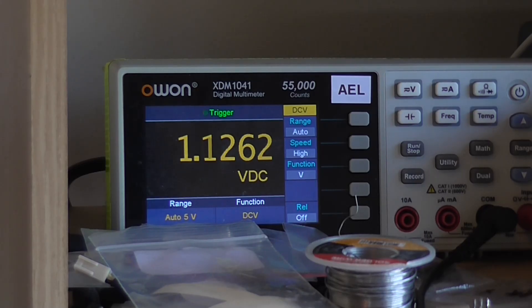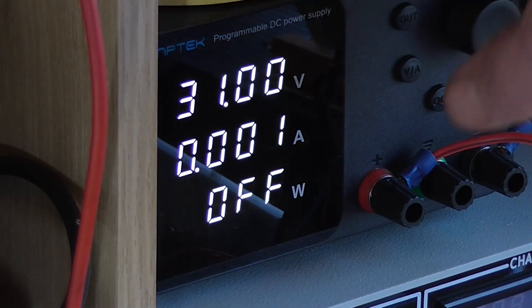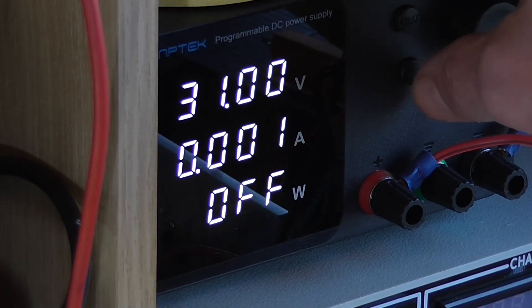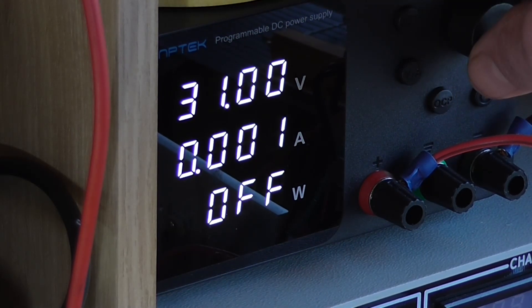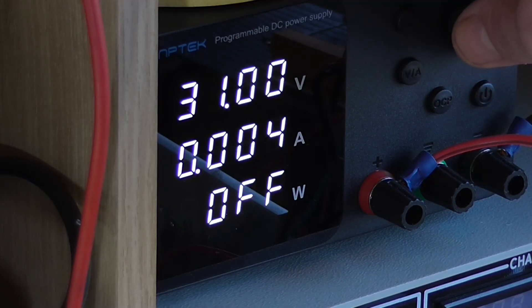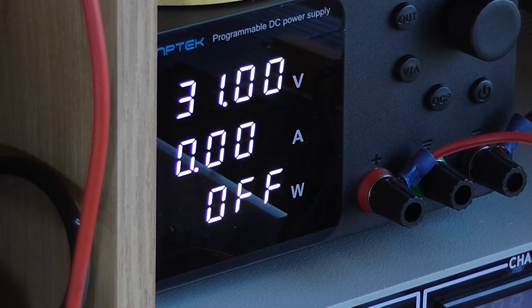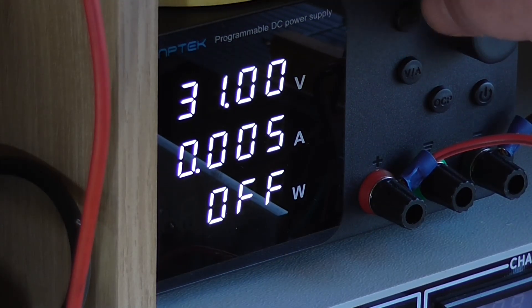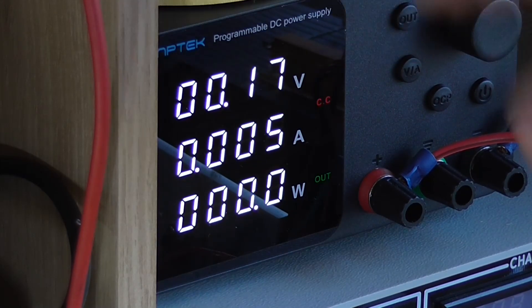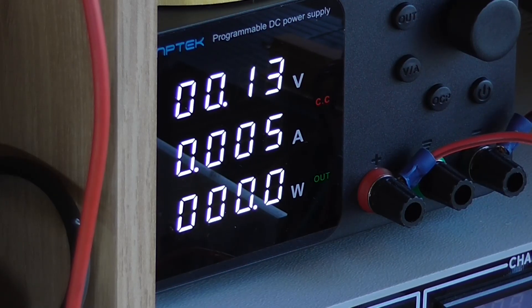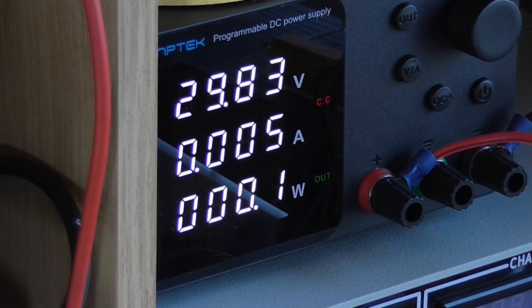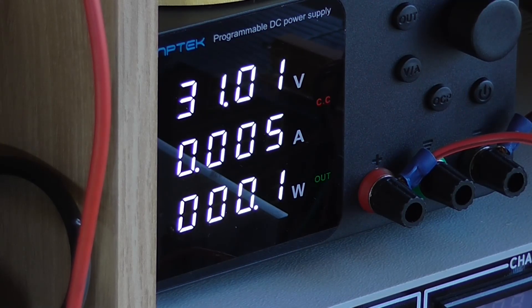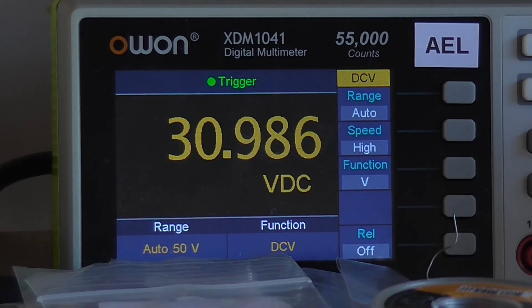And what that is, is we now change the current to something higher. I'm going to go to 5 milliamps. Okay, and we're going to do the process again because the capacitor is at 0.1 of a volt now. And there it goes, starting to charge. And we're at the full voltage as the meter is confirming.